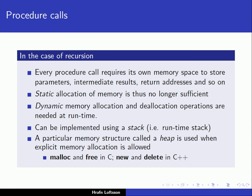Looking at recursion in more detail, every procedure call requires its own memory space to store parameters, intermediate results, return addresses, and so on. Therefore, static allocation of memory is no longer sufficient, because we may have many copies of a procedure running simultaneously. We really need some kind of dynamic memory allocation and deallocation at runtime.